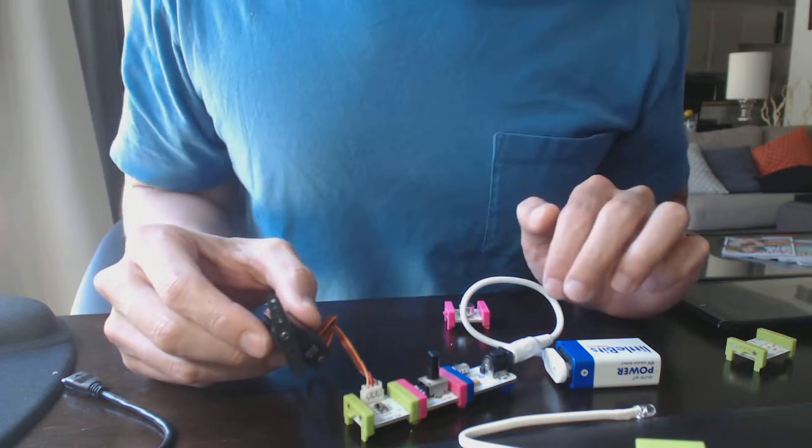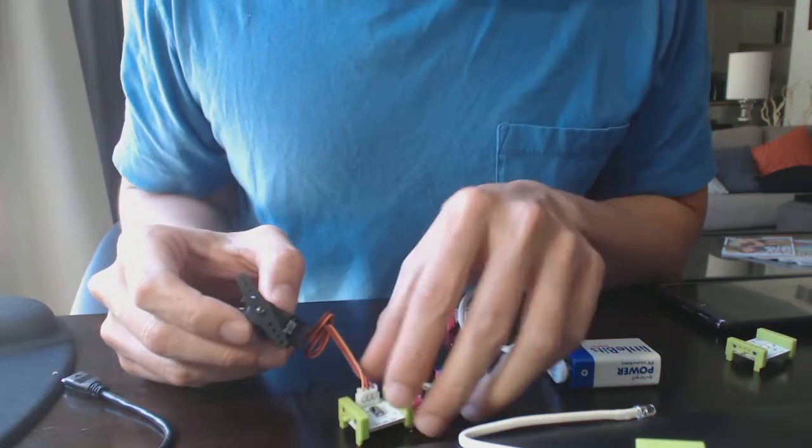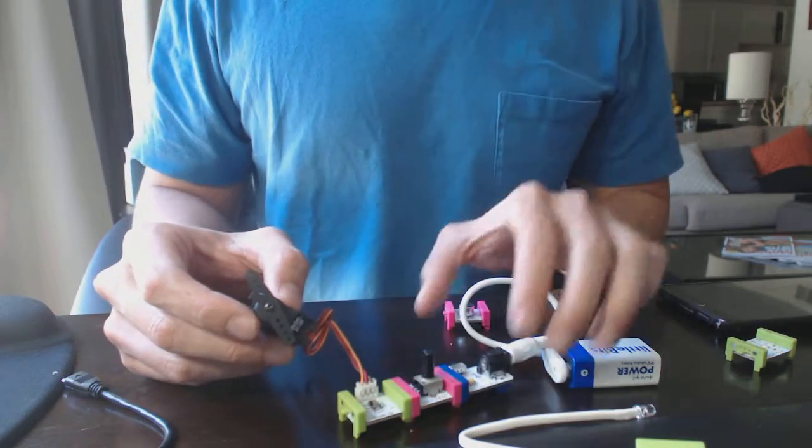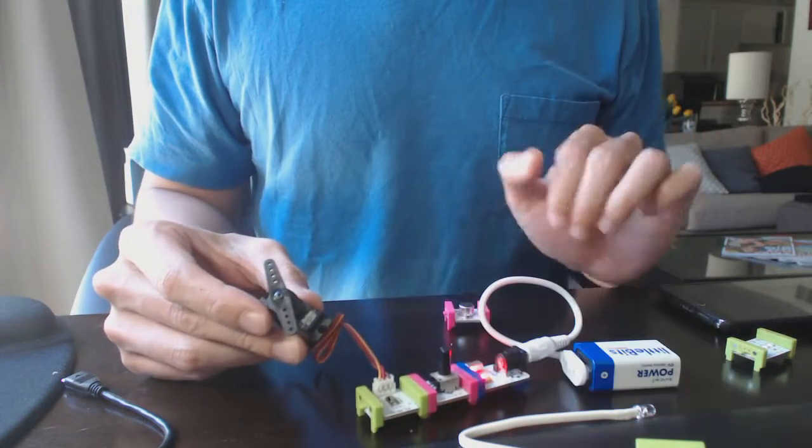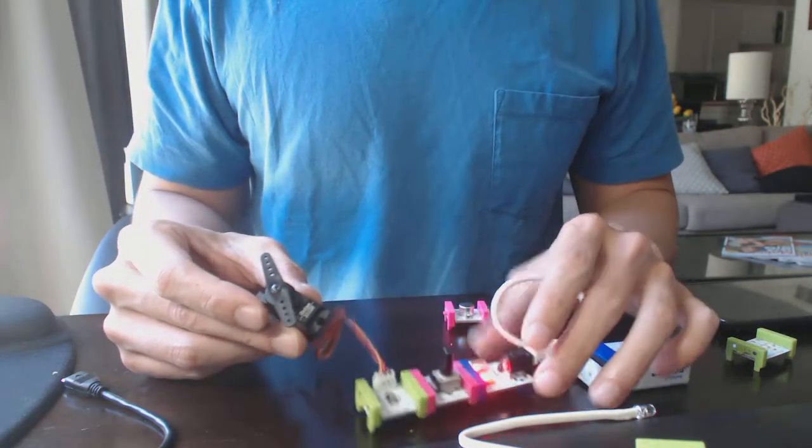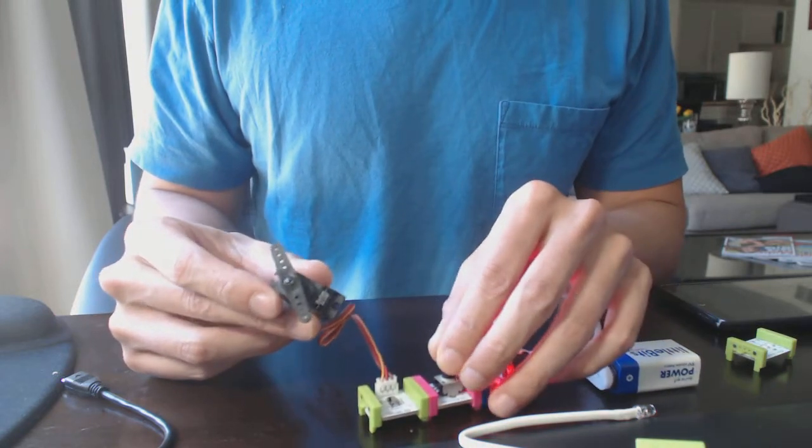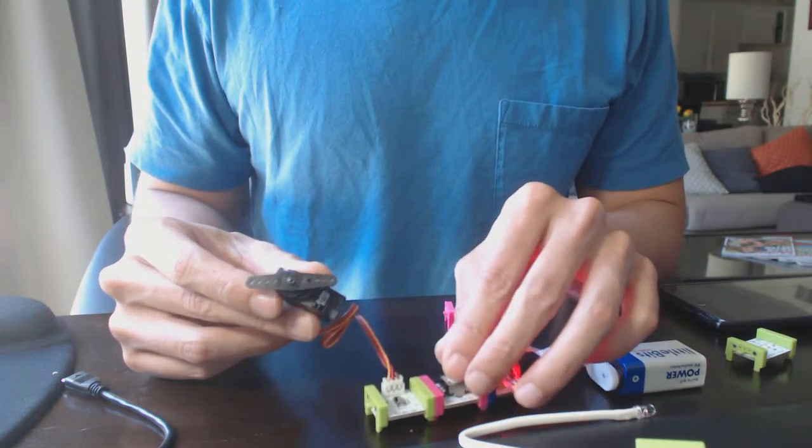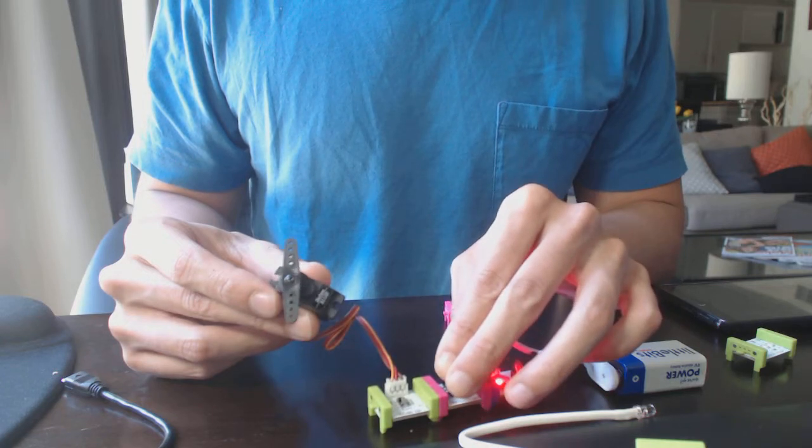I'm going to demonstrate two different modes that are on the servo bit. The first thing is the turn mode. So I'm going to turn this on. There we go, we got power. And as I move this, you're going to see the angle of the motor turn.